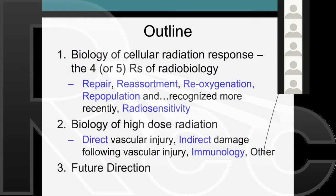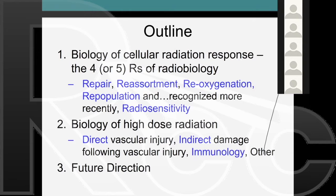My outline is first to talk about the biology of the cell's response to radiation, categorized by the five R's of radiobiology: repair—that's DNA repair; reassortment of cells within the cell cycle, because cells in the cell cycle have different radiation responses; reoxygenation, because oxygen is the most potent sensitizer of radiation damage; repopulation, which is the growth of the tumor; and finally radiosensitivity, which has been identified more recently.